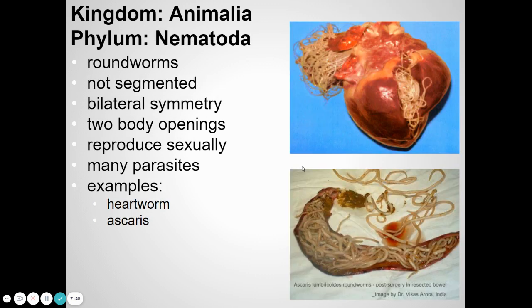Another type of worm is nematodes — roundworms. Some of these are parasites. If you have a dog, you might give them a pill called Heartgard once every three months. That pill prevents heartworm — a roundworm that, instead of living in the intestine, goes into the heart and circulatory system of the dog, feeds off their blood, and as it grows can clog the heart so it can't move blood anymore, which can be fatal.